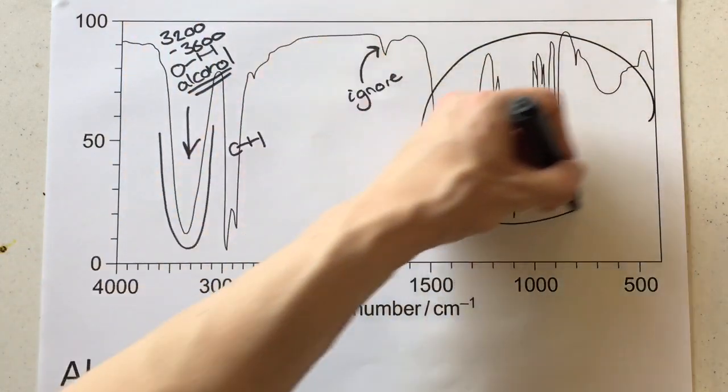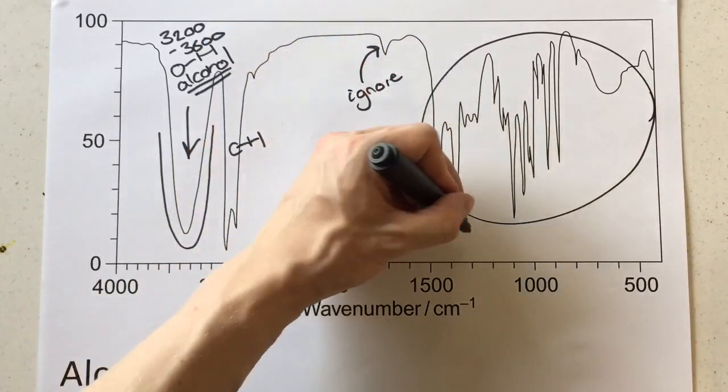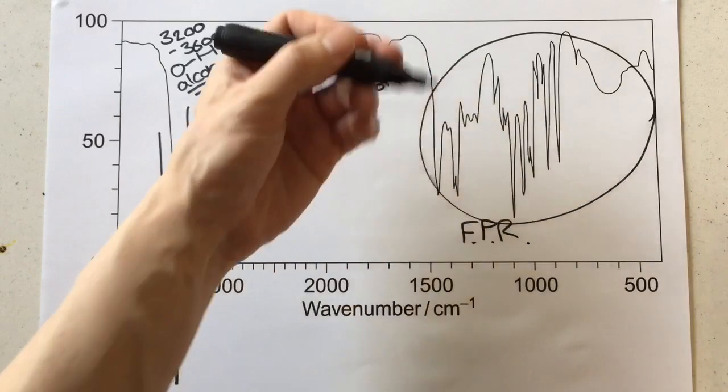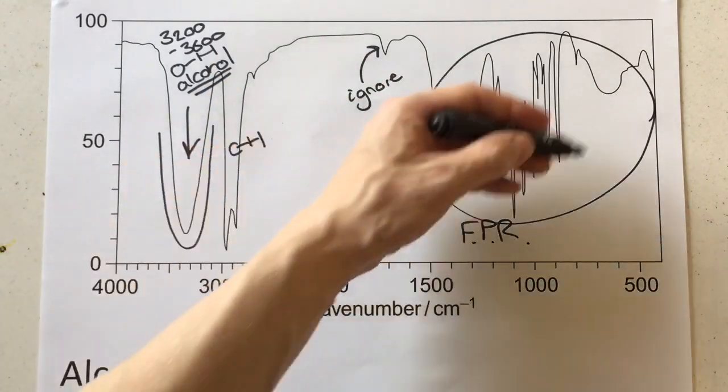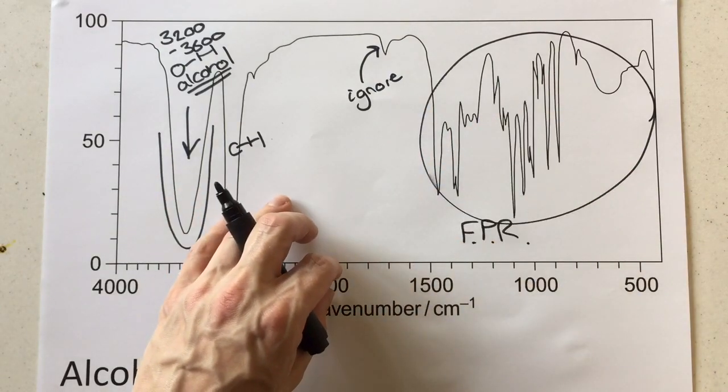You may be looking at this region over here and thinking, how am I going to examine all of that? Don't have to. This is referred to as the fingerprint region and it can be matched to a database of fingerprint regions to figure out exactly which alcohol this is. We don't have an identity for it, but you won't be asked to delve into here in the exam.